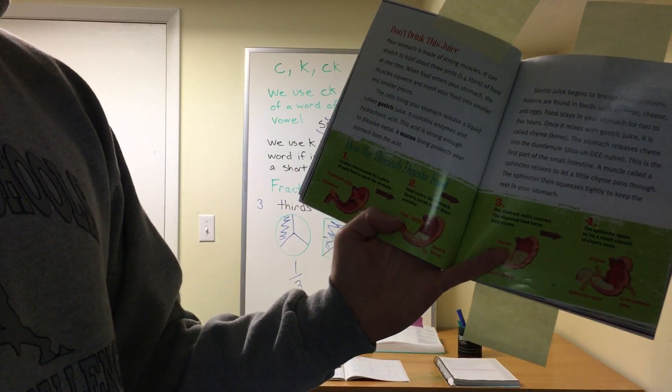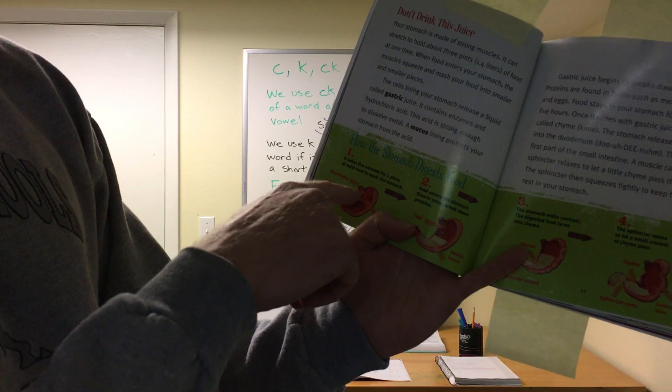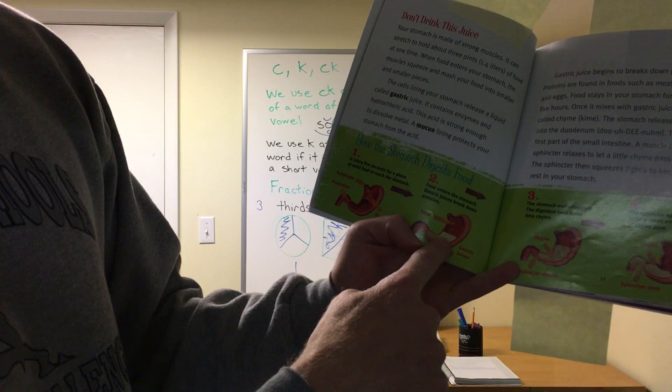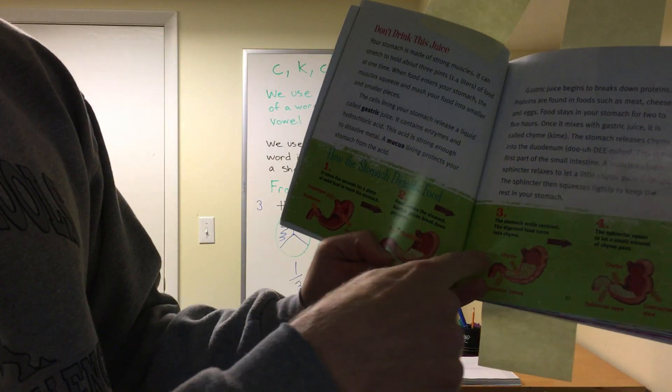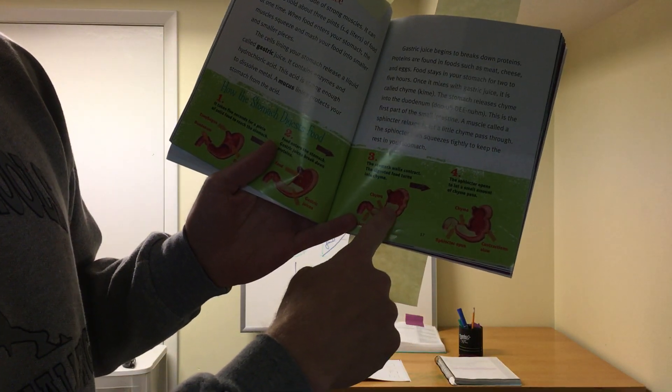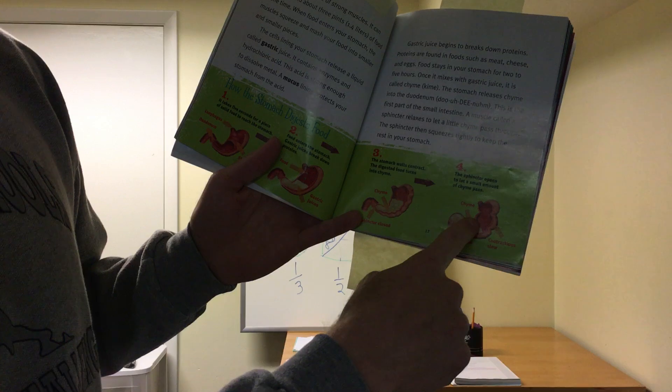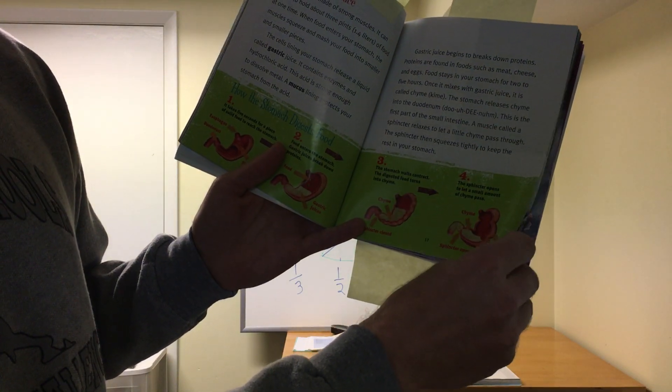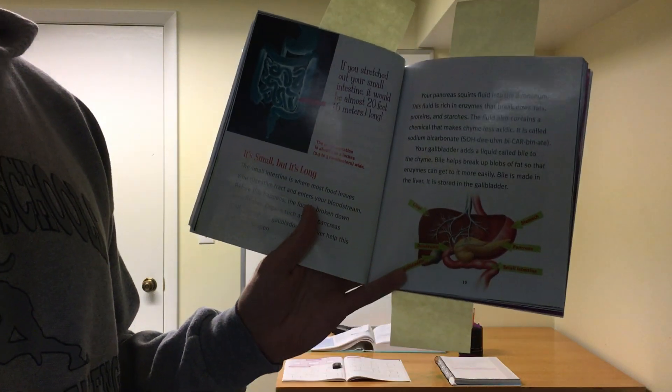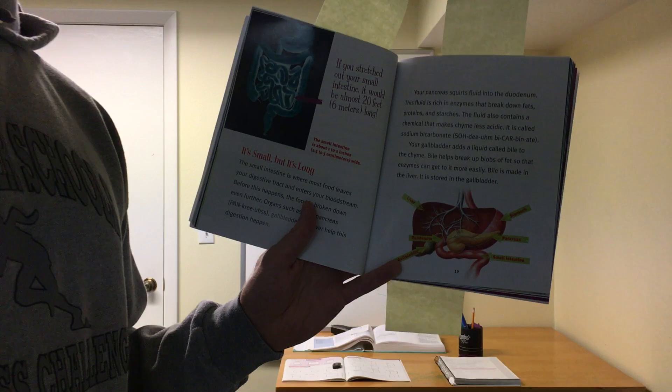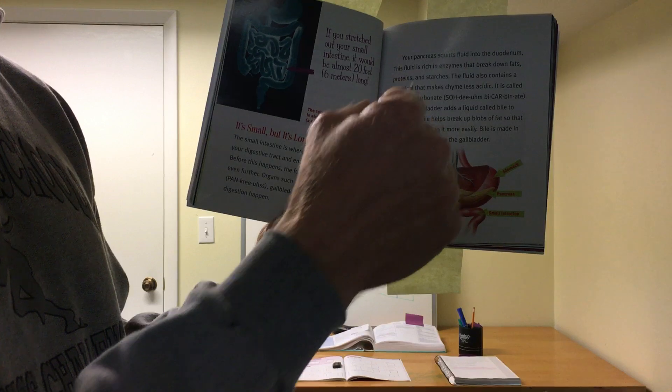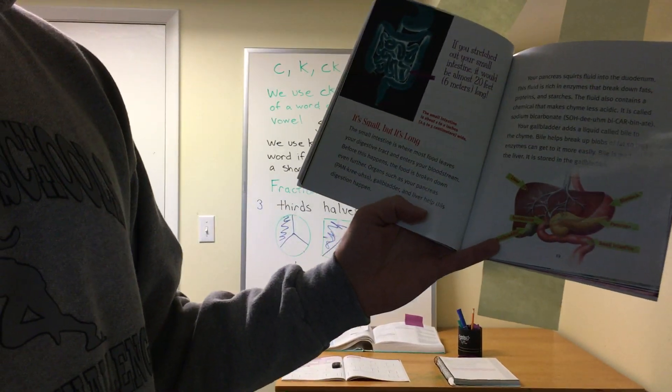So how does the stomach digest food? It says it takes five seconds for a piece of solid food to reach the stomach. Food enters the stomach. Gastric juices break down proteins. The stomach walls contract, it means kind of squeezing. The digested food turns into chyme. The sphincter opens to let a small amount of chyme pass. So it's kind of like squeezing out. Almost like when we did our puffy paint art on Friday. Where we had the bag and we squeezed a little out at once.